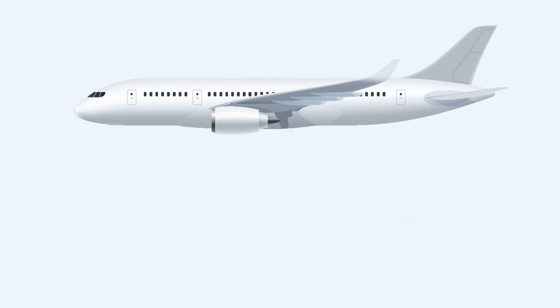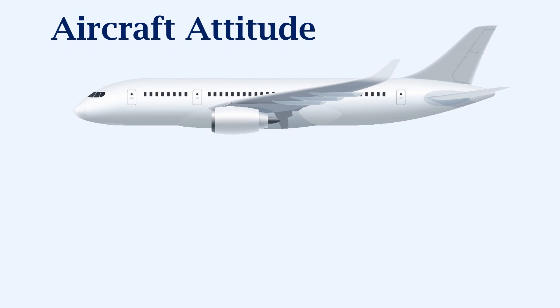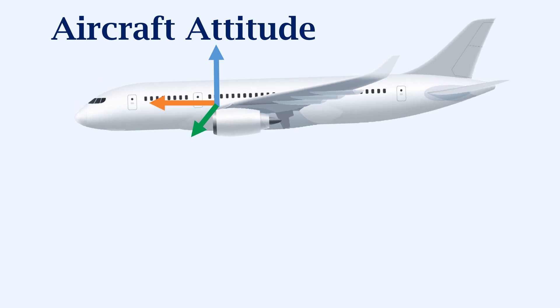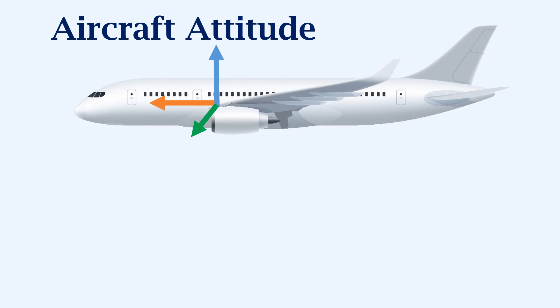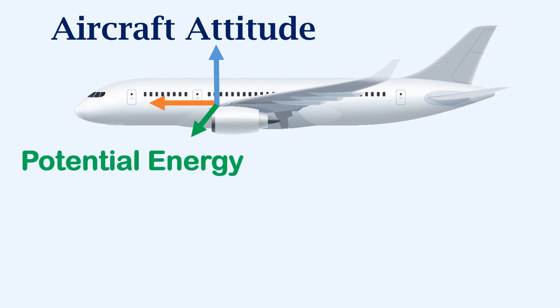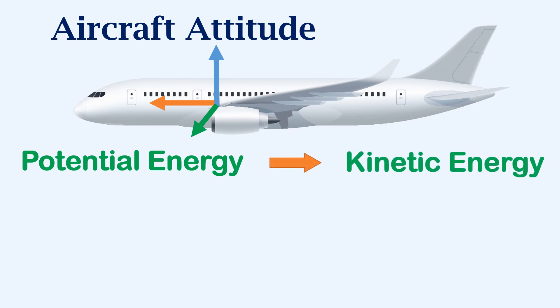The aircraft attitude. The aircraft must be stable on all three axes, and only minor corrections may be allowed if required due to external factors. During the approach phase, the potential energy of the aircraft gets converted into kinetic energy, so proper energy management is essential for a smooth and safe landing. The aircraft attitude plays a major role in the total energy management of the aircraft.